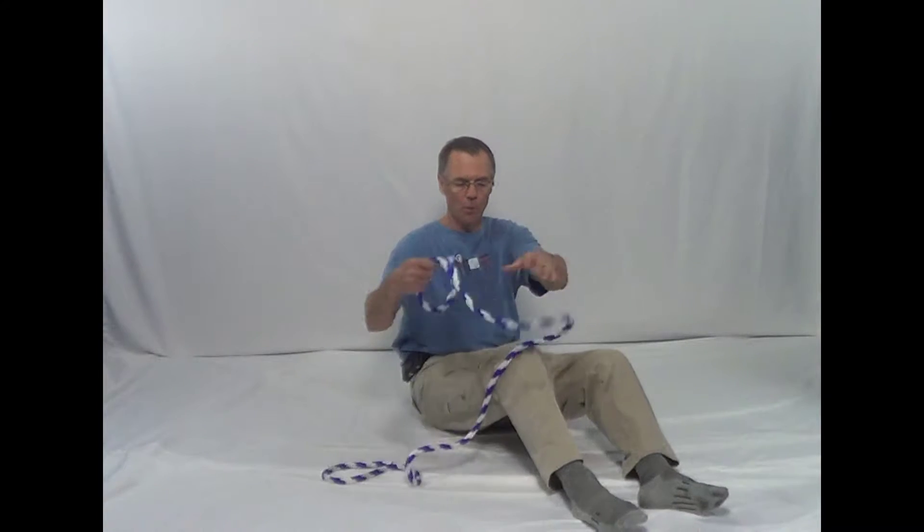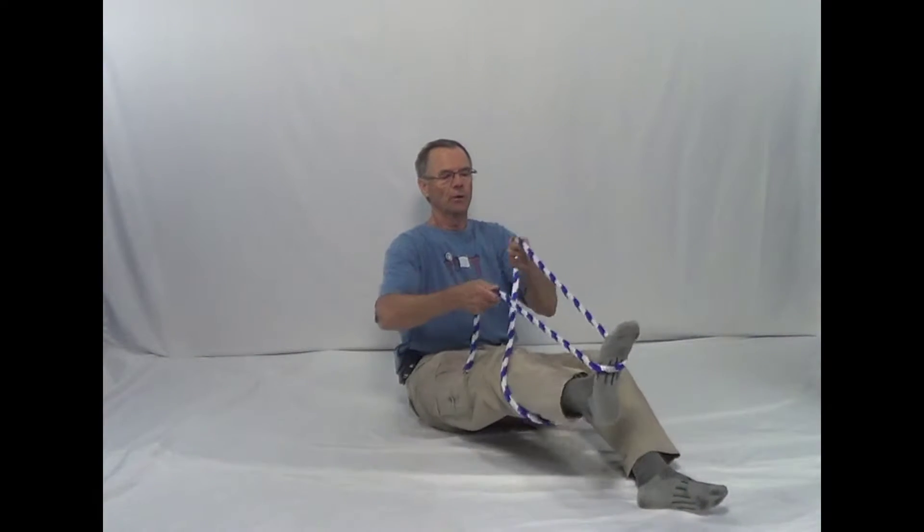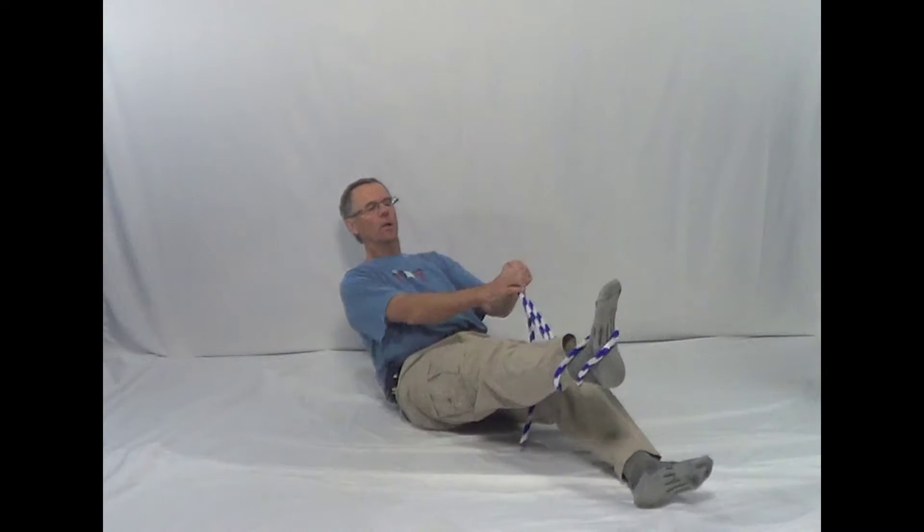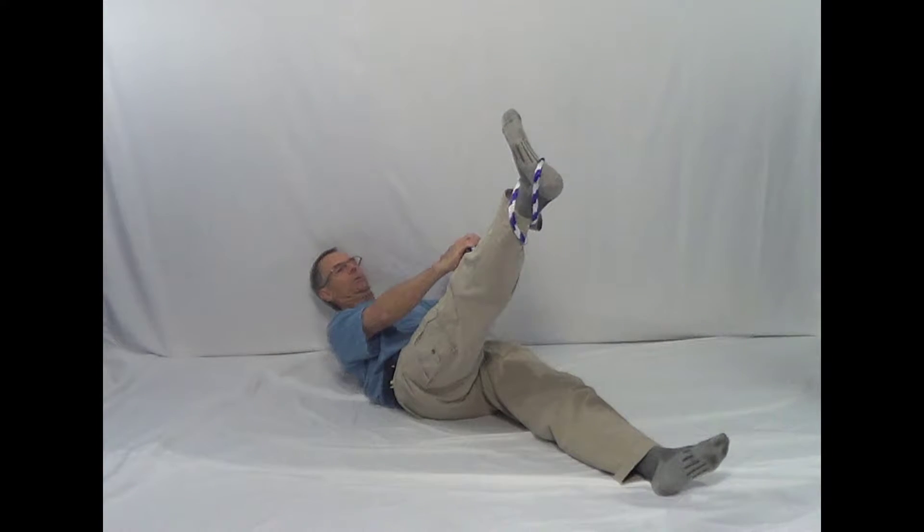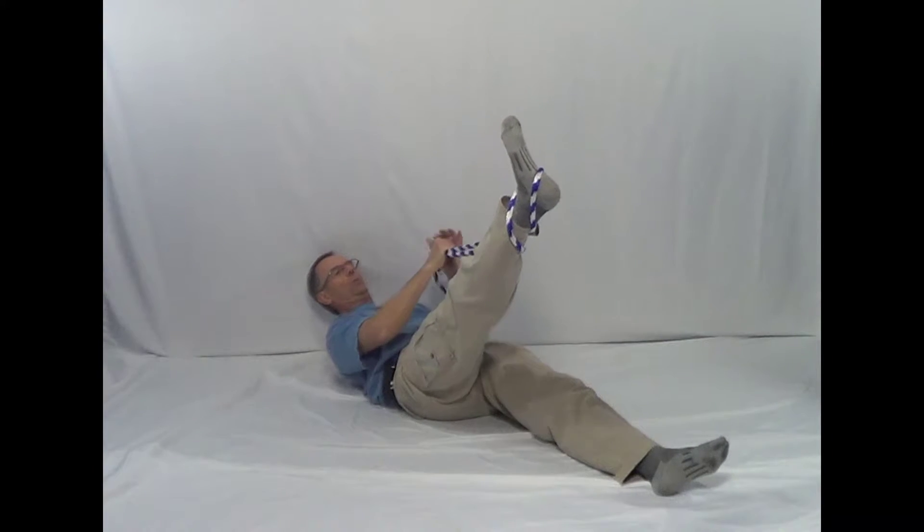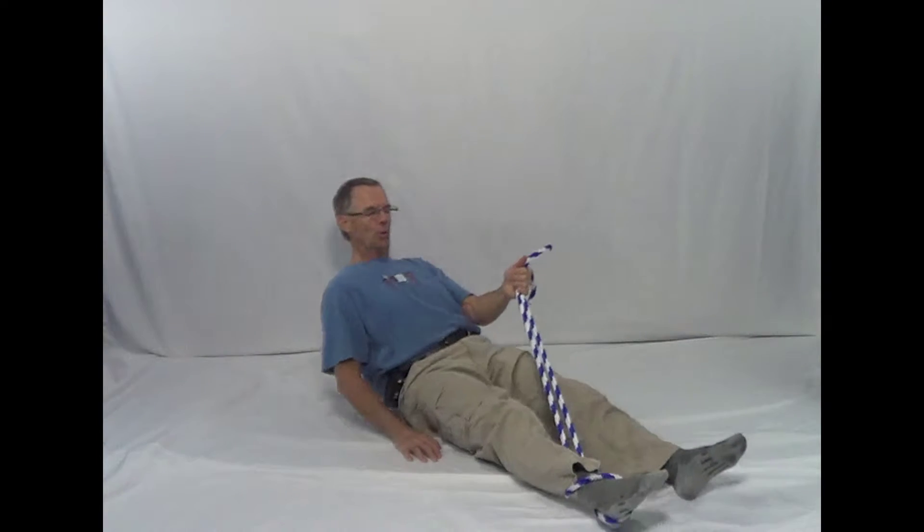So you take your rope, put it on your foot and you go in this direction. What you're going to do is adjust the rope. Everyone has different size quads.